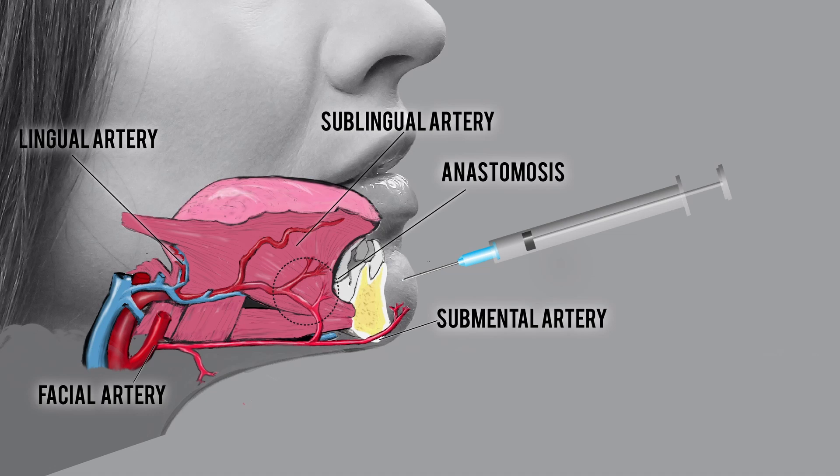The submental artery, as the name suggests, runs underneath the mandible, curves around, and supplies the anterior part of the chin. However, as we'll see, it's a lot more complex than the simple diagram you see in the textbooks.